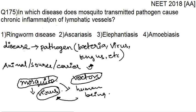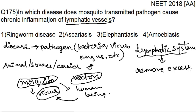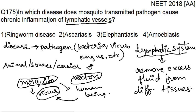Now let's discuss the lymphatic vessels and lymphatic system. You all know the importance of the blood system and blood vessels. The lymphatic system is a parallel circulatory system. Its main important function is to remove excess fluid from different tissues.